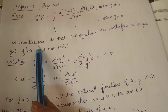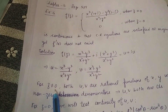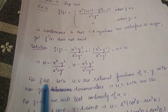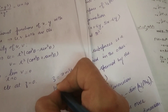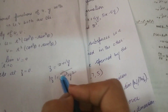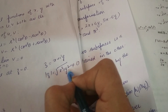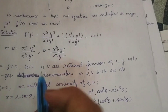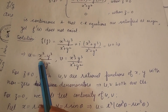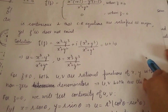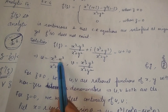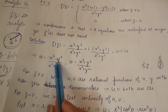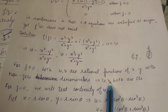Now we will prove that the function is continuous. For continuity, we consider two cases. When z ≠ 0, we have x² + y² ≠ 0. Since u and v are rational functions of x and y — with polynomial numerators and a non-zero polynomial denominator — and we know that if f and g are both continuous and g ≠ 0, then f/g is also continuous. Therefore, u and v are both continuous when z ≠ 0.